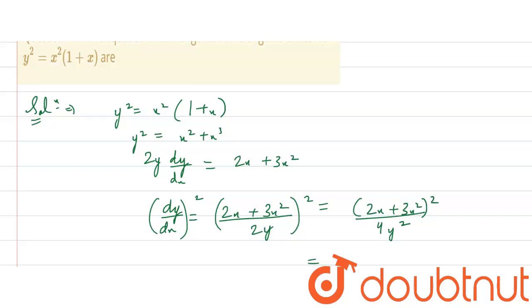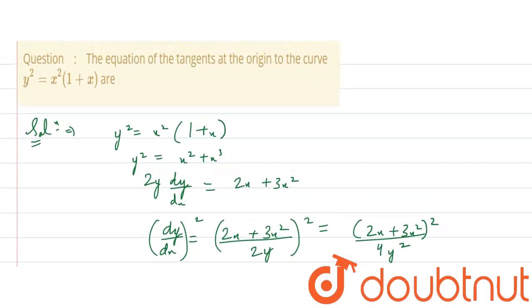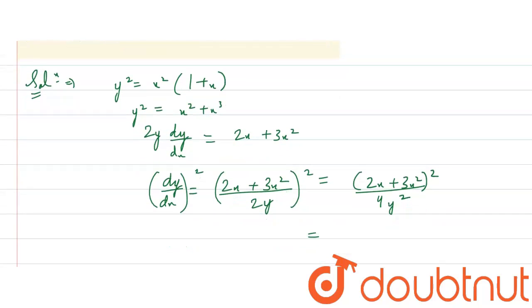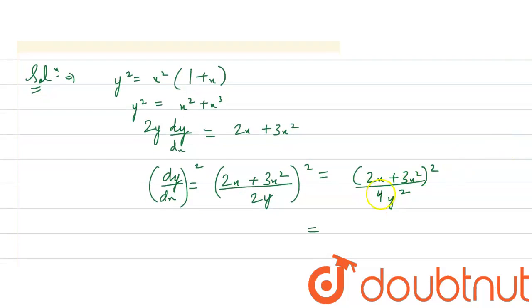Now friends, y square is x square plus x cube. So, 2x plus 3x square is what? y square is x square into 1 plus x. So, I am writing here 2x plus 3x square whole square. So, 4y square is 1 plus x into x square. From here we write the value of y square. Now friends, what we will do?